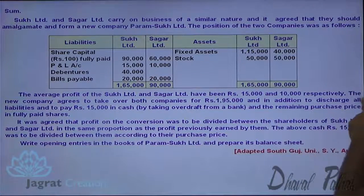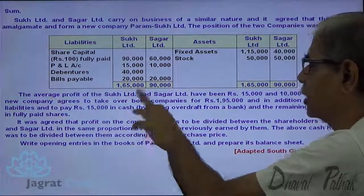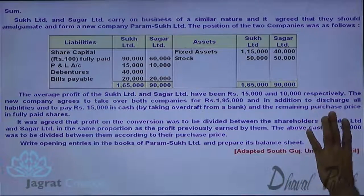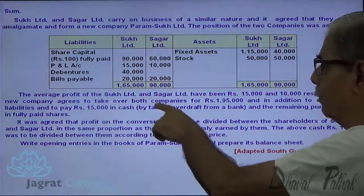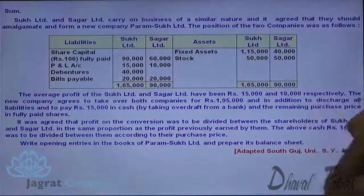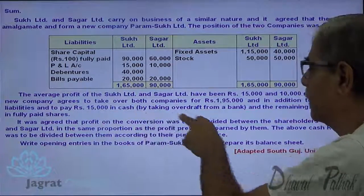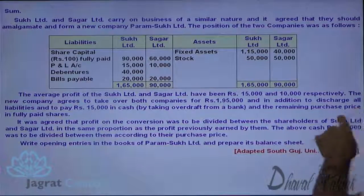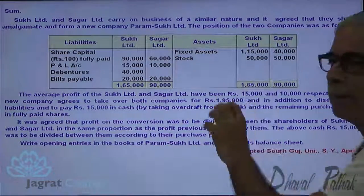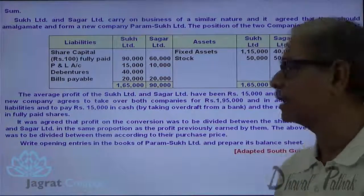In addition to the combined purchase price, the new company will discharge all liabilities and pay Rs. 15,000 in cash by taking a bank overdraft. The remaining purchase price shall be paid in fully paid-up shares. The combined purchase consideration of Rs. 1,95,000 is an important point of this sum.